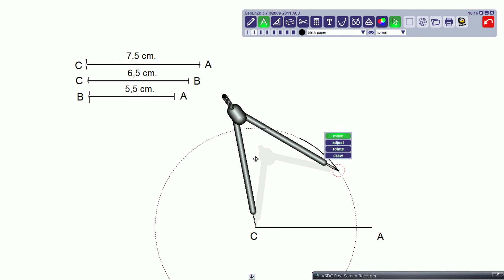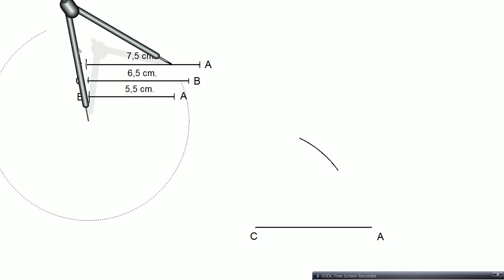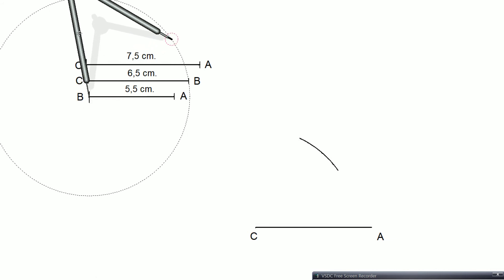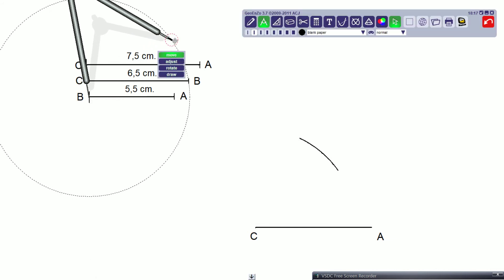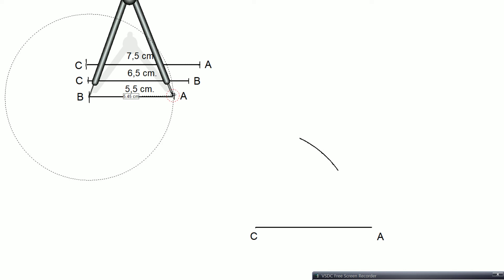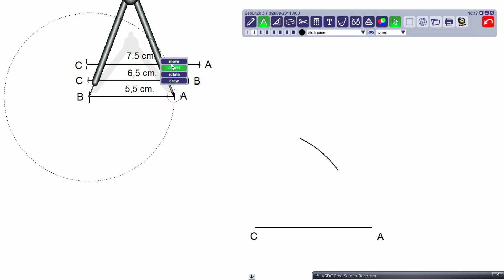Now what I have to do is do the same with the other side of the triangle, the side BA. So again I'm going to take the measure of the side that is 5.5 and when I have it